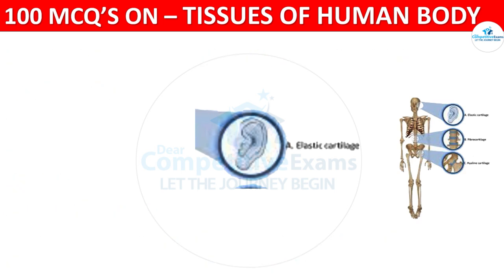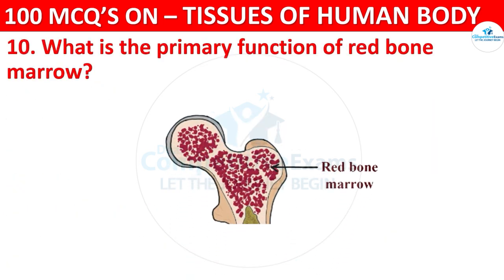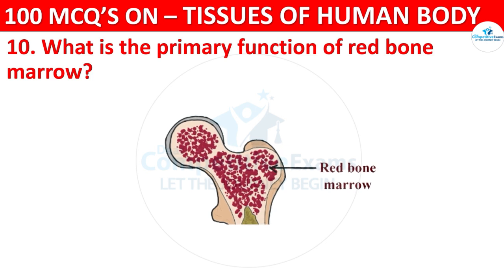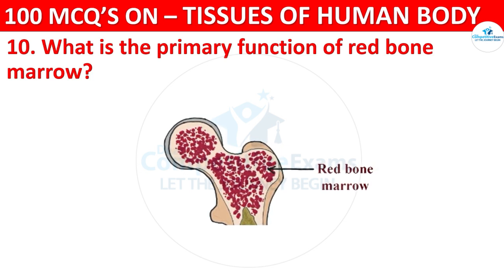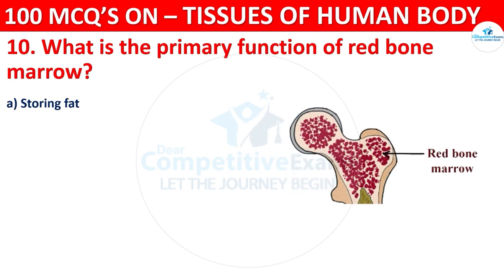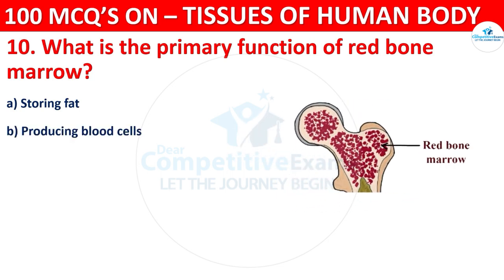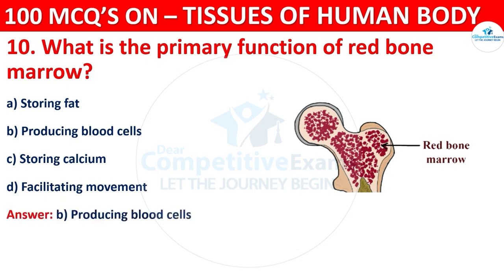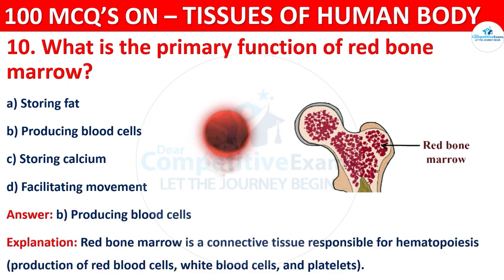Question number ten: what is the primary function of red bone marrow? Options are storing fat, producing blood cells, storing calcium, or facilitating movement. The correct answer is B, that is producing blood cells. Red bone marrow is a connective tissue responsible for haematopoiesis — the production of red blood cells, white blood cells, and platelets.